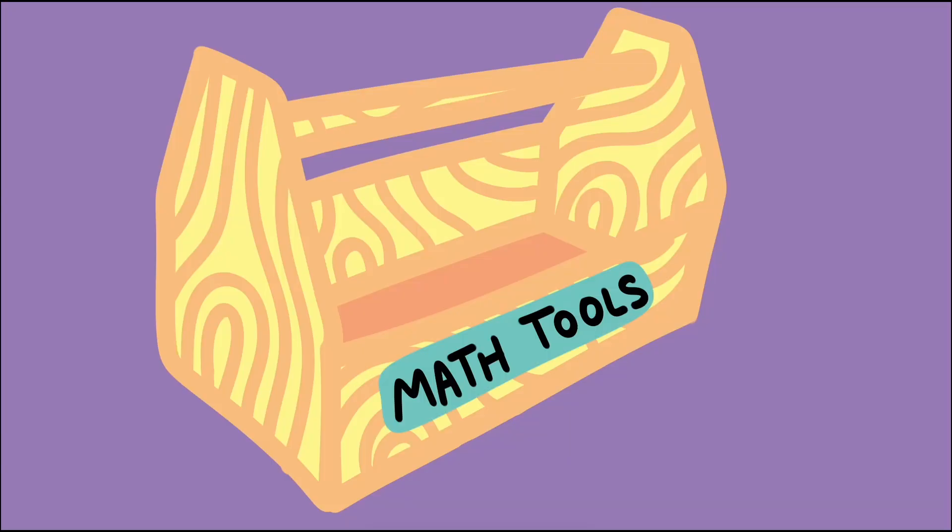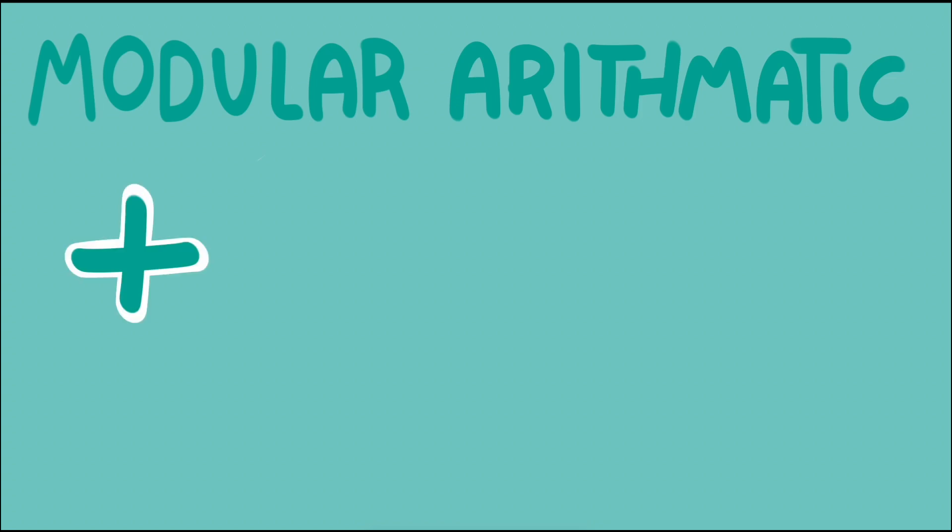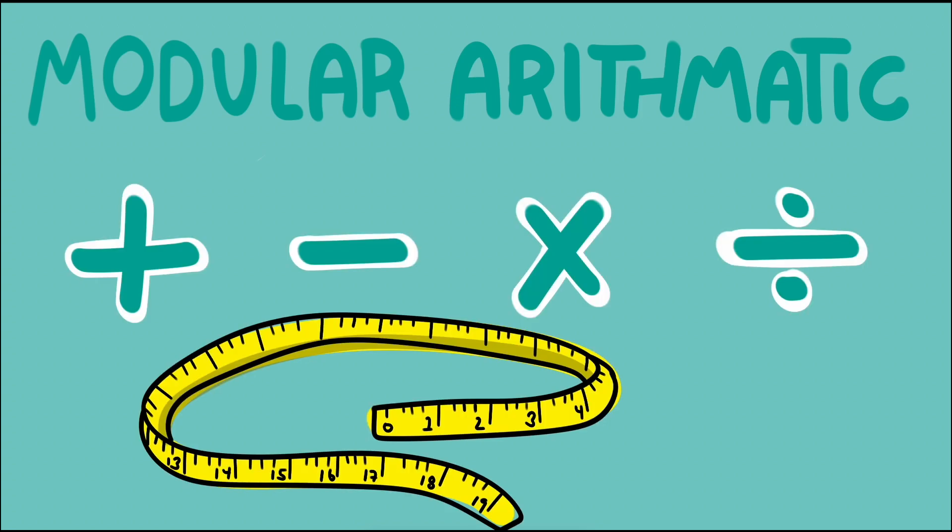Let's begin by building up our toolbox of mathematics. The first tool is modular arithmetic, a system of adding, subtracting, multiplying, and dividing numbers that wrap around in a cycle, indicated by a specific number called the modulus.